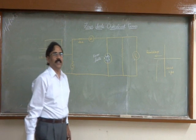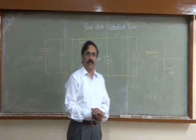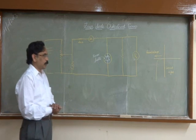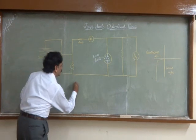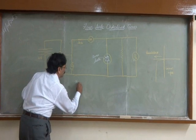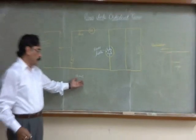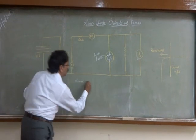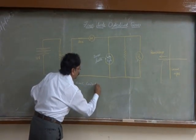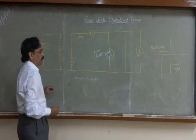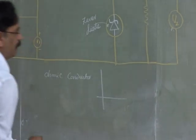We studied that conductors are different. We can classify conductors into two categories. One is ohmic conductors, which obey Ohm's law, and are called ohmic conductors. We have studied Ohm's law in the context of ohmic conductors.